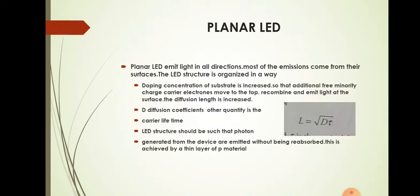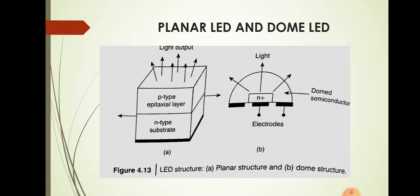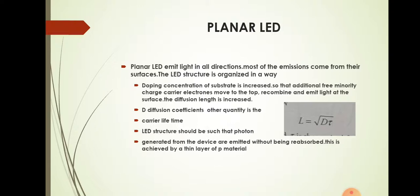First, the planar LED. In the case of planar LED, the diagram is figure A. It consists of an n-type substrate and a p-type epitaxial layer. The n-type substrate will be heavily doped so that majority carriers from the n-type will move to the p-type region and recombine with the holes in the p-type region. That recombination will produce light output. Here direct recombination takes place and most of the light emission is from the surface of the LED.